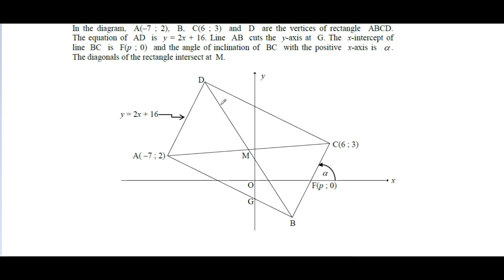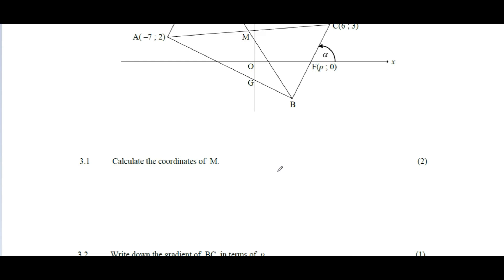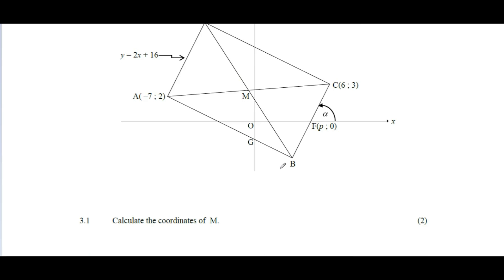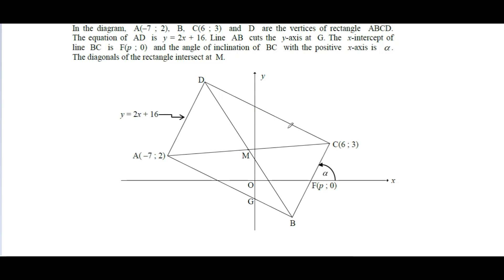They say the diagonals of the rectangle intersect at point M — nicely labeled M because it's actually the midpoint. The first question asks us to calculate the coordinates of M. M is the midpoint, and that's one of the key properties of rectangles you should know.